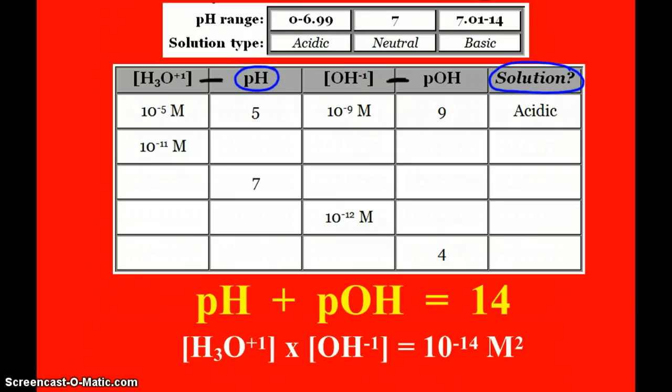So let's look at the next one together. I have a solution with hydronium concentration of 10 to the negative 11 molar. So my pH is 11. Since my pH is 11, and I know pH plus pOH always equals 14, my pOH has to be 3. Since my pOH is 3, my concentration of hydroxide is 10 to the negative 3 molar. What type of solution? pH is 11. That's above 7. Basic.